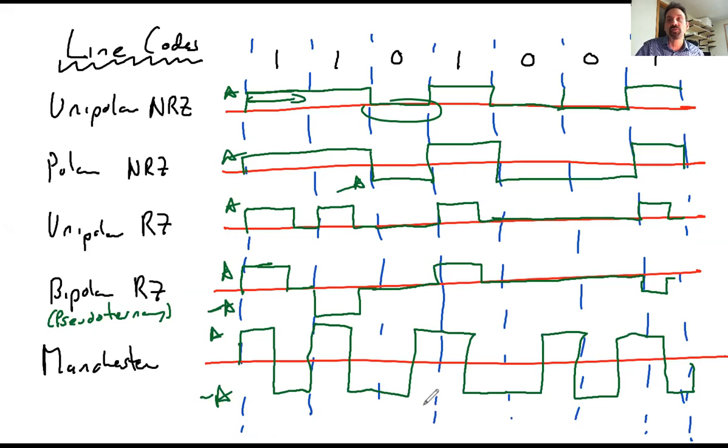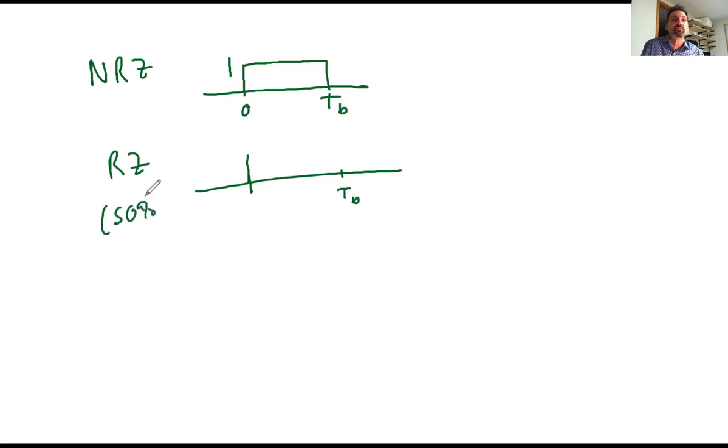So we saw this. So f could be one of several pulse shapes. The non-return to 0 pulse shape would look like this, from 0 to TB and amplitude 1. The return to 0 pulse shape would be from 0 to TB. Let's say there's a 50% duty cycle, which means 50% of the time it's on, and then at TB over 2 it goes off and it's amplitude 1. And then you have the Manchester one, 1 and minus 1. So that would be your base waveform, that would be f of t.